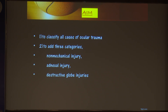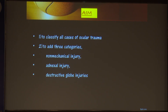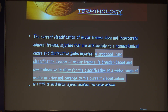To classify all kinds of ocular trauma, one had to add three more categories: non-mechanical injury, adnexal injury, and destructive globe injuries, which were not included in the previous classification. The current classification does not incorporate all three, and a proposed new classification is broader-based and comprehensive, covering a wider range of ocular injuries — as a fifth of mechanical injuries involves the ocular adnexa.